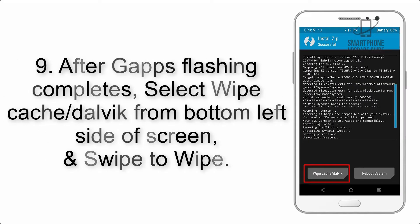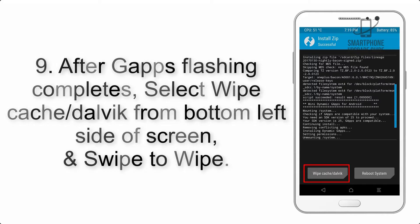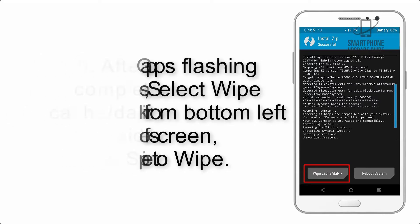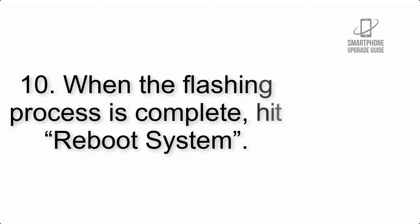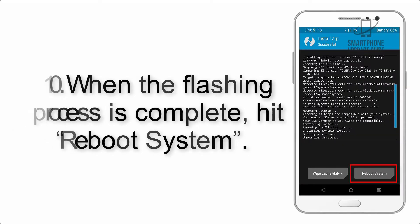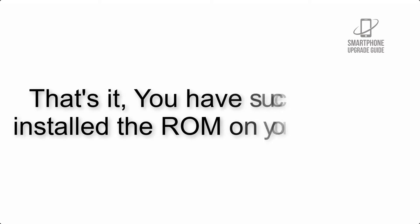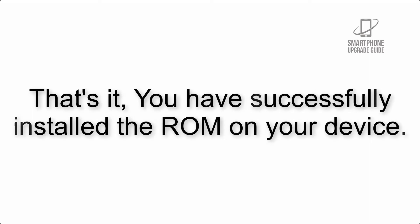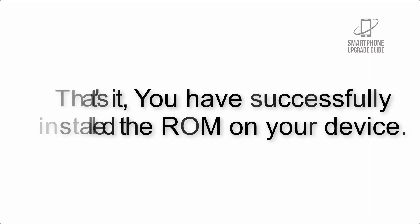Step 8: flash the GApps zip package in the same manner. Step 9: after GApps flashing completes, select Wipe Cache and Dalvik from the bottom left side of the screen and swipe to wipe. Step 10: when the flashing process is complete, hit Reboot System. That's it — you have successfully installed the ROM on your device.